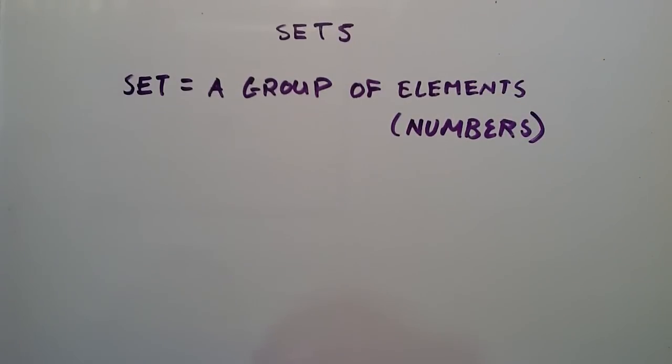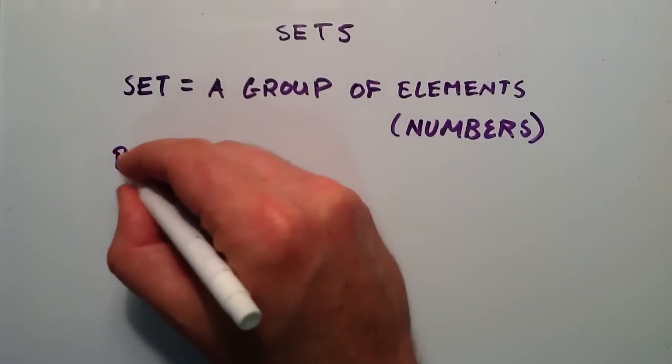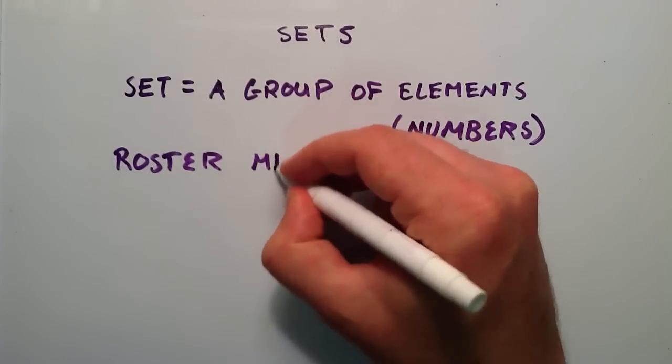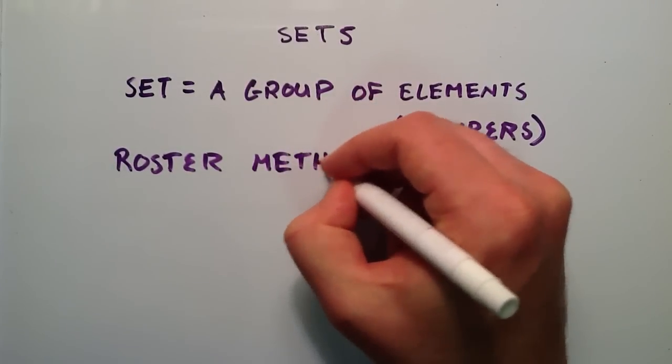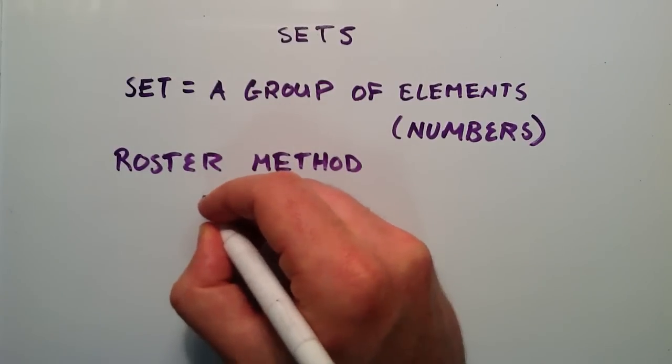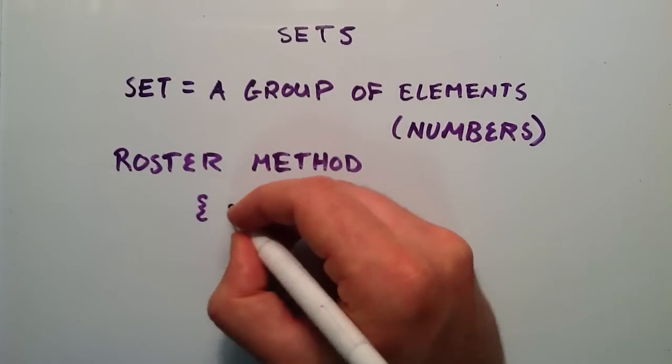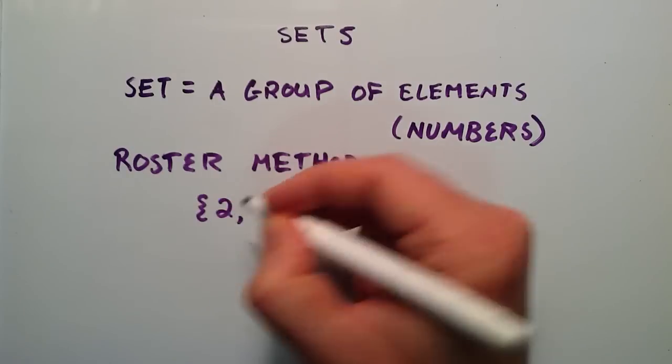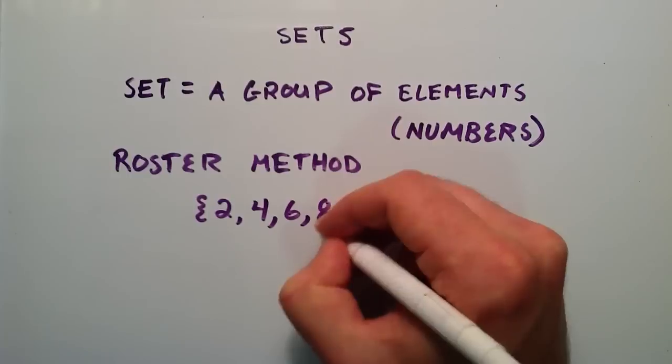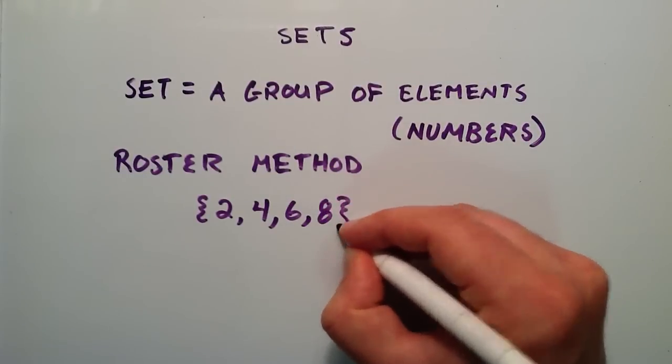One way that we can write a set is by using the roster method. The roster method is just a nice way to write out all the elements in a set. The way the roster method looks is you simply have a curly brace on one side, and then you fill it in with your elements. So we'll fill it in with the elements 2, 4, 6, and 8, and then close it with another curly brace.